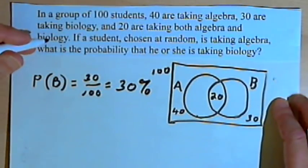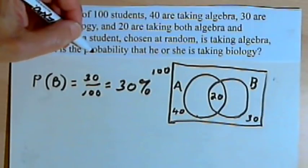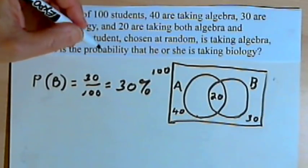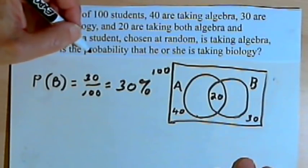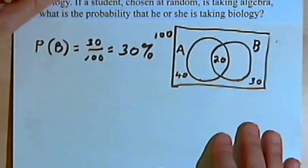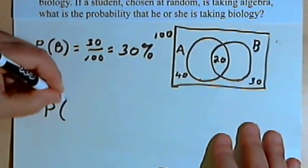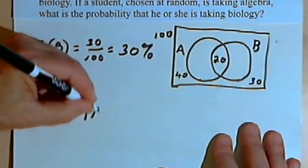But what the question actually asks is this: a student has already been chosen at random, and that student is taking algebra. What's the probability that he or she is taking biology? This is conditional probability. We're going to write this as the probability of B given A.